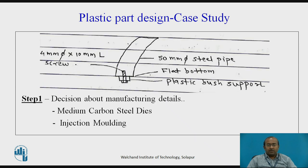Let us proceed with the iterative process of plastic part design. This is the sketch which is initially to be imagined — the flat bottom plastic bush support. A 4 mm screw is the requirement and 50 mm diameter for the steel pipe leg is given. The decision about manufacturing details: it is a medium carbon steel die, and with previous knowledge and experience, it is to be manufactured through injection moulding.